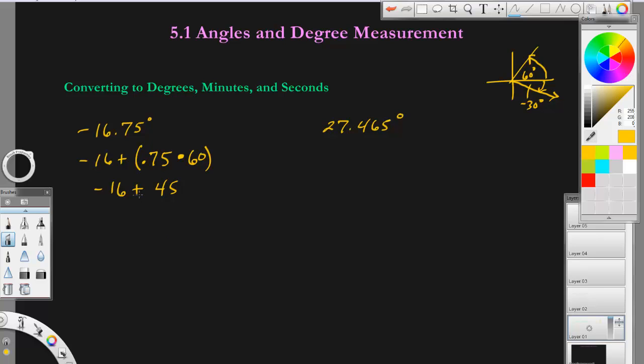Instead of adding this together, this is going to be 45 minutes. So this is negative 16 degrees, 45 minutes. If you have one little mark here, that's considered to be minutes. If you have two marks, that's seconds.